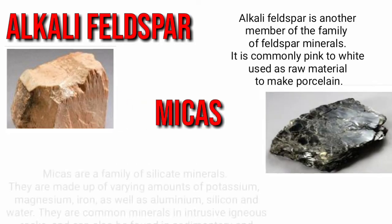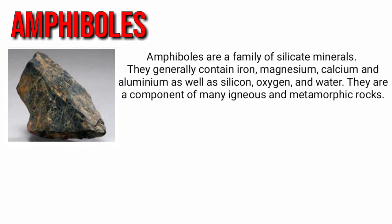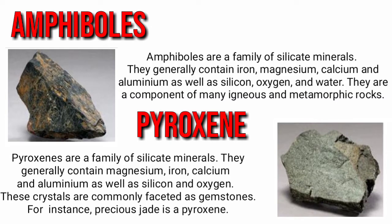We also have micas — a family of silicate minerals. They are common materials in intrusive igneous rocks and also found in sedimentary rocks. We also have amphiboles, which are a family of silicate minerals and a component of many igneous and metamorphic rocks. We also have pyroxene; these crystals are commonly faceted as gemstones — for instance, precious jade is a pyroxene.